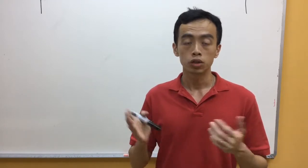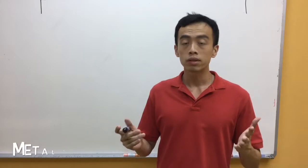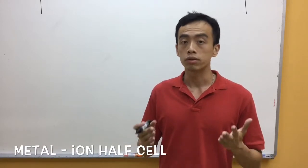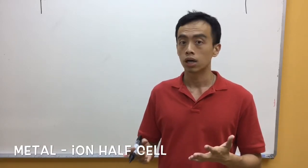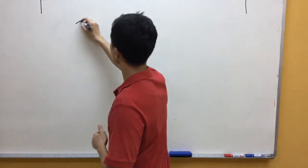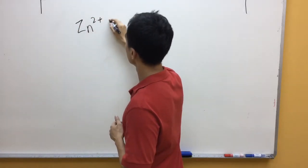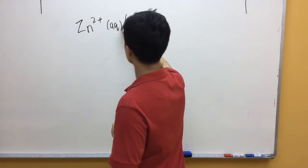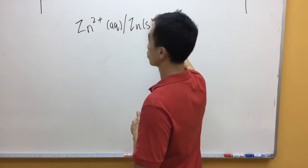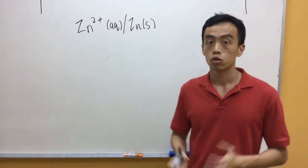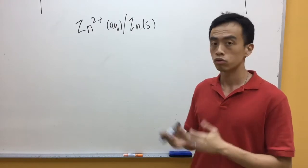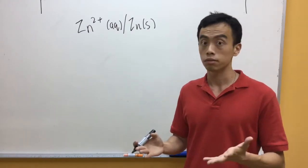So let's take a look at how to draw each of these half-cells. Now an example of our metal-ion half-cells will be our zinc-2+ and zinc electrode. So we'll be using this as an example. So drawing this half-cell is actually very simple.